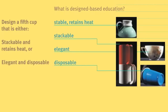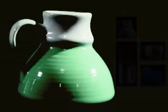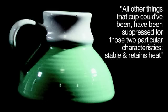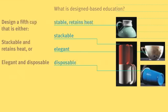Here's an example. Here are four cups. The one on the top is a driving mug — it's stable and retains heat. Its shape is wide at the base and it's made of ceramic. All other things that cup could have been have been suppressed for those two particular characteristics: stable and retains heat. The red and white ones stacked here are Heller mugs designed by Massimo Vignelli. There's a slight bevel in the bottom that allows one to sit in the next. Look at the handle — it's convex where the hand is concave and concave where the hand is convex, so it's very anthropomorphic.